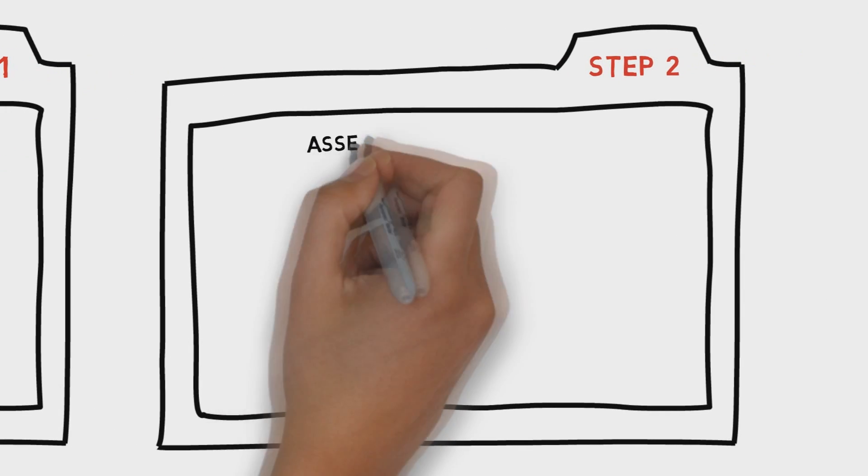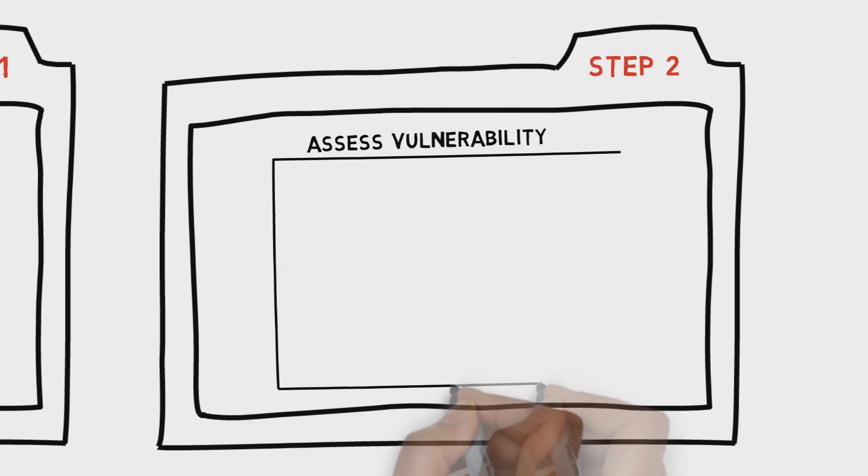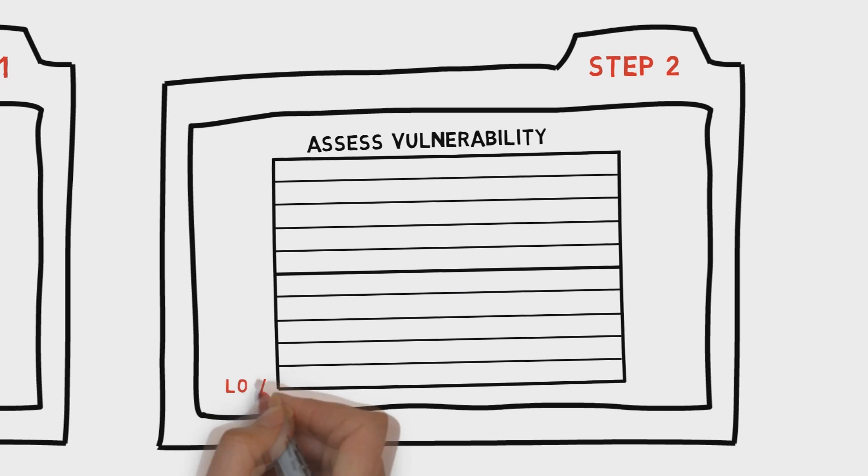Step 2: Estimate the probability that an information set will be breached and assign each set a vulnerability score.